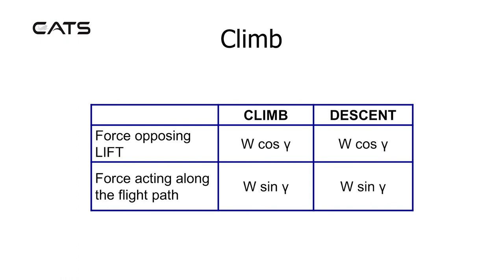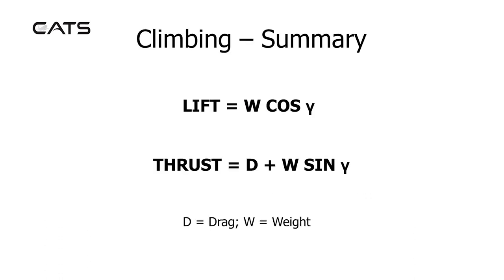This can be summarised in a table. The force opposing lift is weight cosine gamma for the climb, and it's also the same for the descent. The force acting along the flight path is weight sine gamma, and it's also the same for the descent. In summary, lift equals weight cosine gamma, and thrust equals drag plus weight sine gamma.